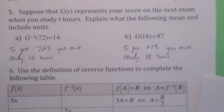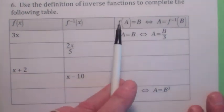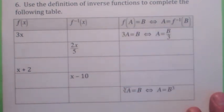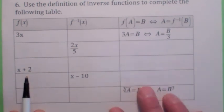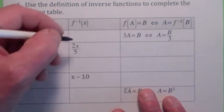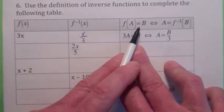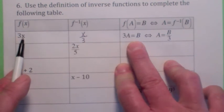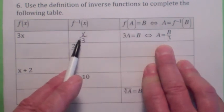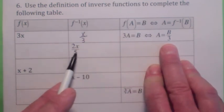The definition of inverse function: f(a) = b means the same thing as a = f inverse of b — think of it as switching coordinates. If the function is 3x, the inverse function is x/3. So f(a) = 3a = b if and only if a = f inverse of b, which is b/3. We're using the definition of inverse function in context.